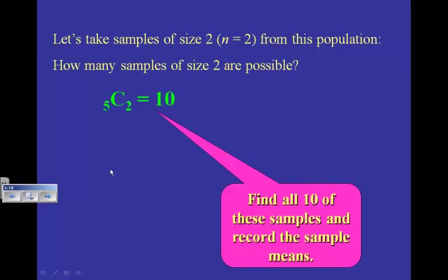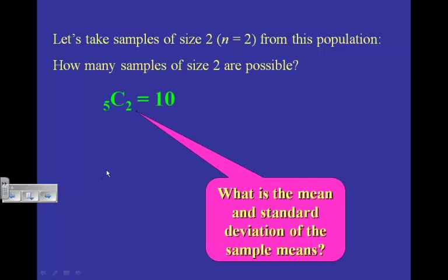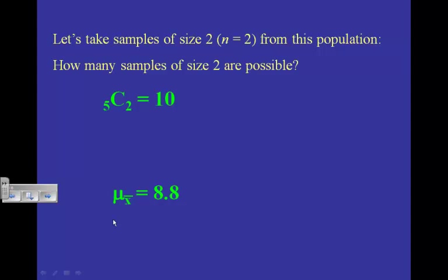If I calculate the mean and standard deviation of all 10 sample means, the mean of all the sample means — that's μ sub x-bar — is 8.8, and the standard deviation of the sample means is 2.49. To summarize: I took 5 fish, picked 2, giving 10 possible combinations. I listed all 10, found the average of each, then added those 10 averages together and divided by 10 to get 8.8. Then I did the same for the standard deviation.